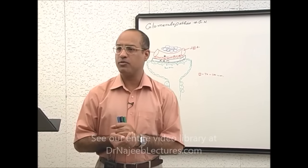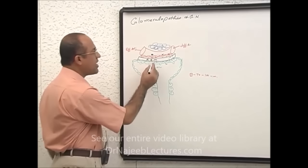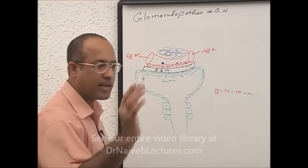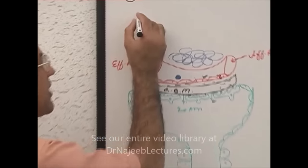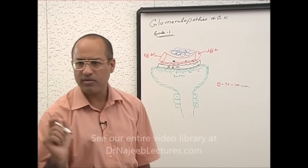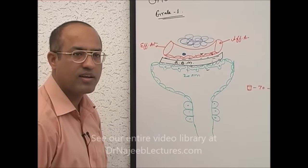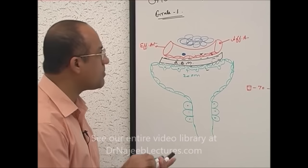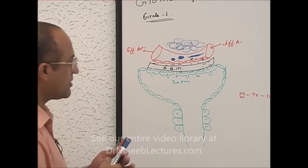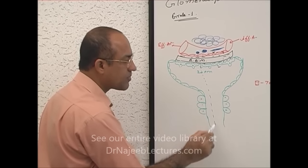Now we come to different patients with different degrees of injury to glomeruli. If there is a very mild injury — let's say a grade 1 or plus-1 injury — due to some immunological mechanism, the smallest molecule will start leaking. The smallest molecules are albumins. So albumin starts coming down into urine, and we say there is albuminuria.